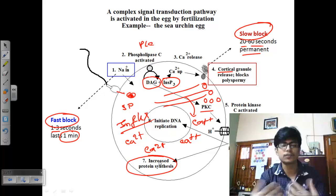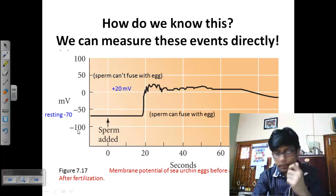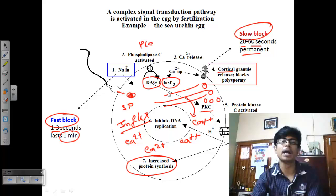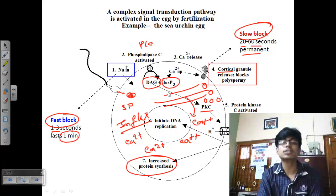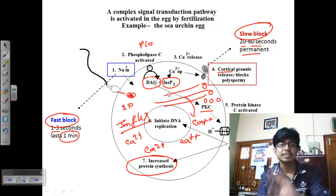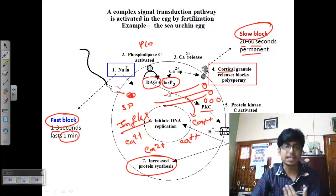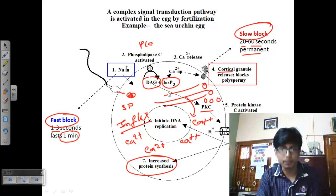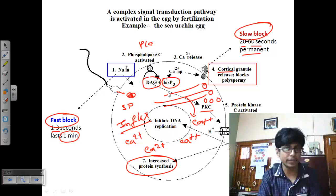The diacylglycerol remaining on the membrane activates protein kinase C, which helps export protons from the egg cytosol, increasing the internal pH. This increased pH promotes protein synthesis, signaling that fertilization occurred properly and polyspermy is prevented, after which cell division proceeds. The exact mechanism behind both the fast and slow blocks is that sodium ions and calcium ions — being positively charged — change the membrane potential of the egg.